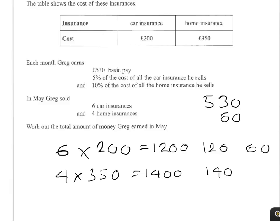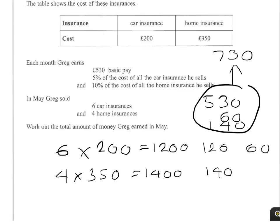We add that to our running total — we've got three numbers to add up: £530, £60, and £140. Well, 140 and 60 is 200, and 200 plus 530 is 730. So the total amount of money Greg earns in May is £730.